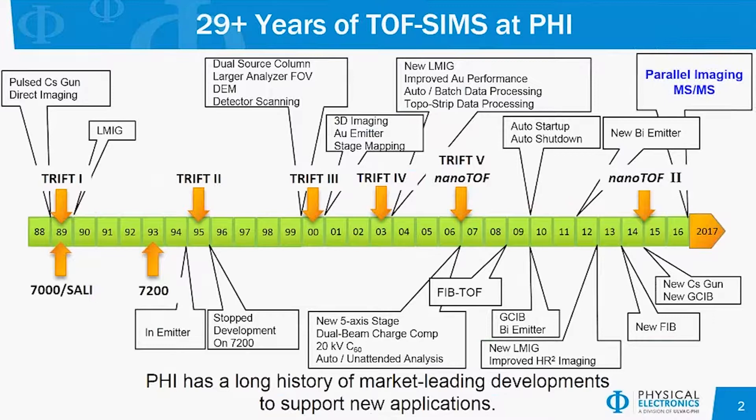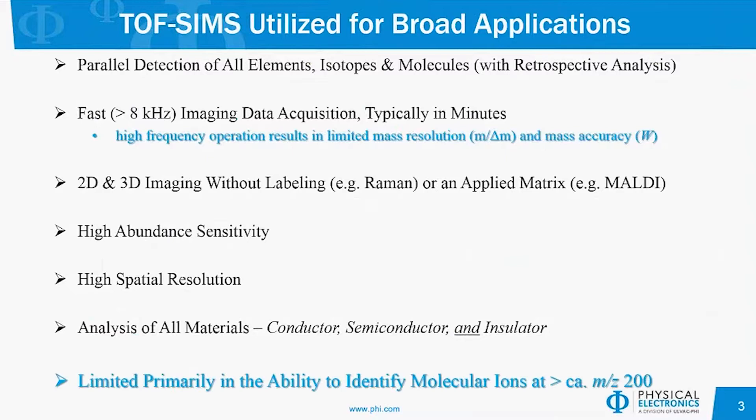Today we're going to focus on the tandem MS capability, what we call parallel imaging MS-MS. Many of you are probably familiar with TOF-SIMS, some may not be. TOF-SIMS is really nice in a number of application areas because there's no limitation in mass range, theoretically. We can detect all elements and isotopes as well as molecules present on the surface of the sample. All of that spectral and imaging information is saved for retrospective analysis.